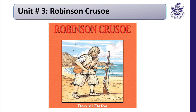Unit number 3: Robinson Crusoe. Students, please open your book page number 28. Robinson Crusoe is an autobiographic kind of novel based on the adventures of the narrator, written by Daniel Defoe. He was an English reader, journalist, writer and pamphleteer. He is most famous for his novel Robinson Crusoe published in 1719, which is claimed to be second only to the Bible in its number of translations.